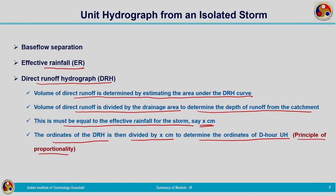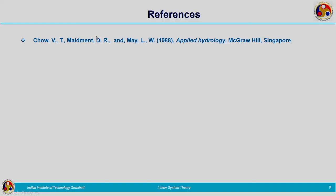This is the method utilized for deriving the unit hydrograph from an isolated storm. We need to solve some problems related to it. The reference for this topic is the Applied Hydrology textbook by Venti Chau and others. Here I am winding up this lecture. Thank you.